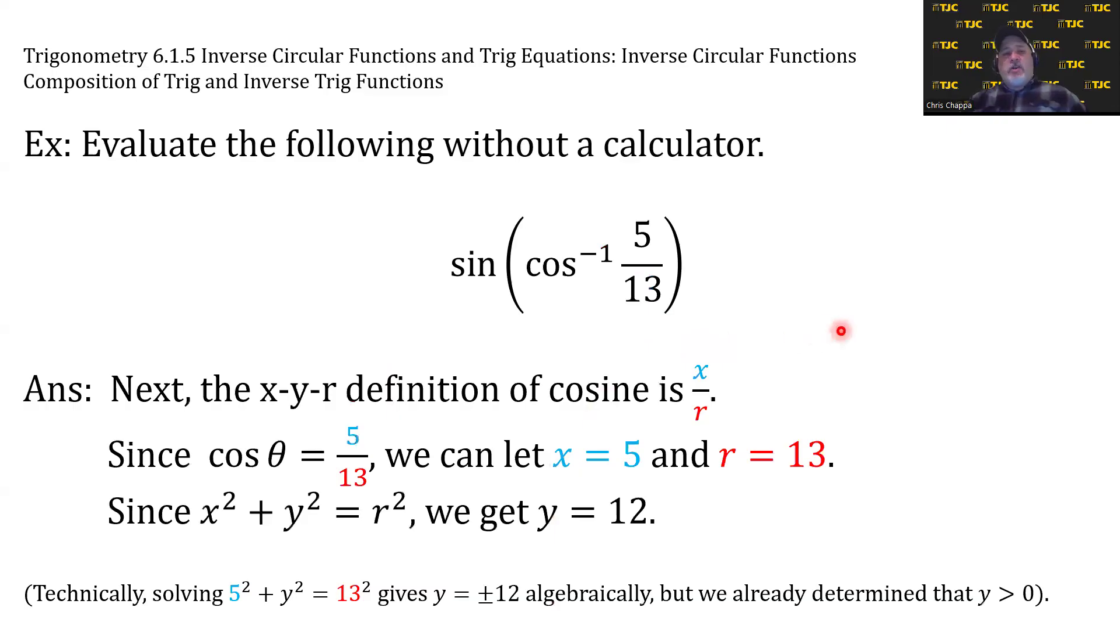Now, as far as knowing that cosine of theta is 5 thirteenths, we can deconstruct the 5 thirteenths into two separate values based on the x, y, r definition of cosine. The x, y, r definition of cosine is x over r. And since cosine of theta is 5 thirteenths, we can let x equal 5 and r equal 13. I realize this is not a unit circle, but the size of the triangle and the size of the circle is irrelevant. And since x squared plus y squared equals r squared, we can substitute 5 for x, 13 for r, and solve to get y equals 12.